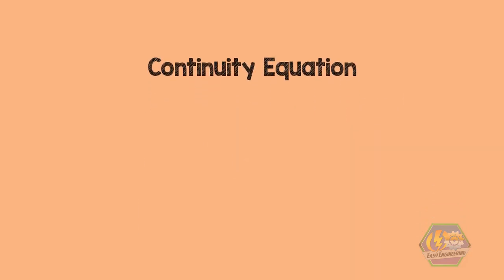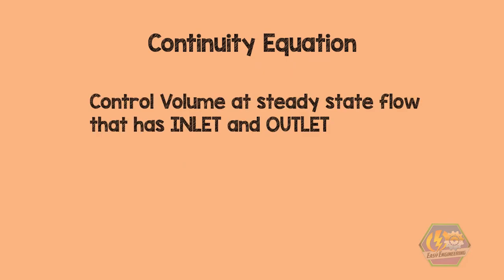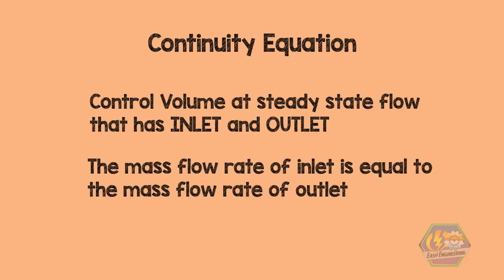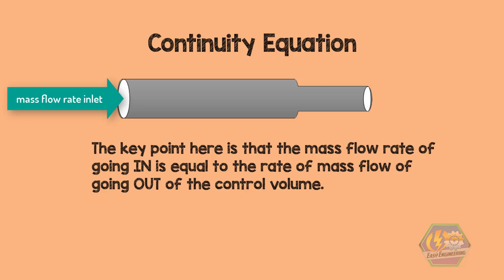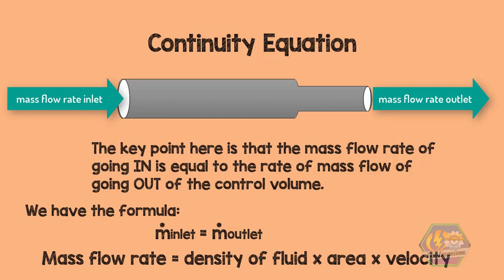Hello there, good day. This is Easy Engineering. Our discussion for today is all about the continuity equation. By its name, it is obviously an equation — a mathematical expression of the principle of conservation of mass. For a control volume in steady-state flow with an inlet and outlet, the mass flow rate at the inlet equals the mass flow rate at the outlet. We can write this as: mass flow rate equals the density of the fluid multiplied by the area and its corresponding velocity.